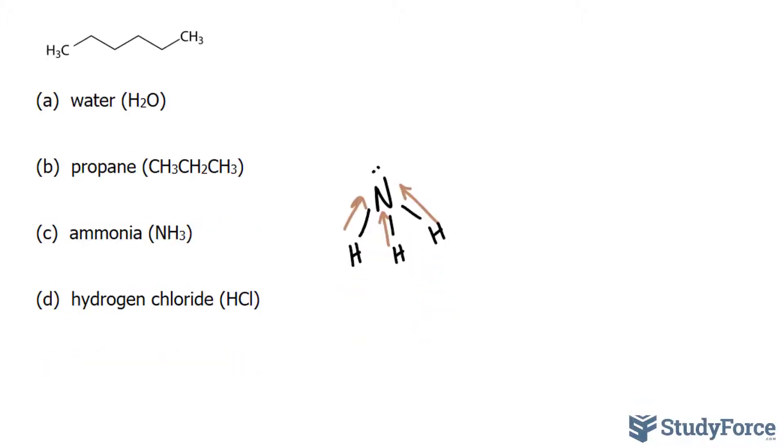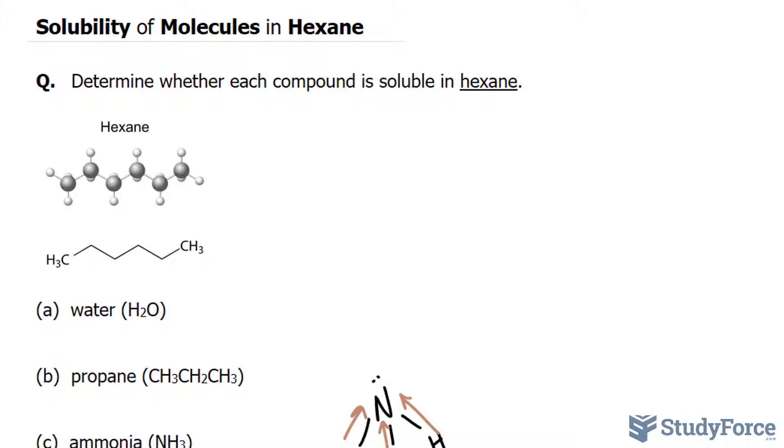And lastly, we have hydrogen chloride. Hydrogen chloride is a simple molecule. These two atoms are held together by a covalent bond where the chlorine, given that it's more electronegative than hydrogen, will have the electrons closer to it than the hydrogen atom. As a result, this is a polar molecule, and it will not dissolve in hexane.